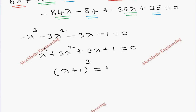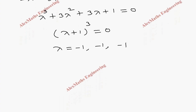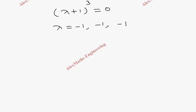This factors as lambda plus 1 whole cubed equal to zero, which means lambda plus 1 times lambda plus 1 times lambda plus 1 equal to zero. By equating each factor to zero, we get three values of lambda, all equal to minus 1. So the three eigenvalues are lambda equals minus 1, minus 1, minus 1 — repeated eigenvalues.